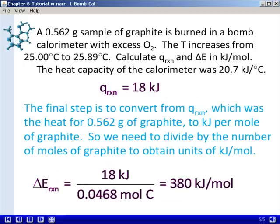Then the final step is to take that Q for the reaction and convert it into ΔE, but remember that Q for the reaction was the heat for only 0.562 grams of graphite, and we want to convert that to kilojoules per mole of graphite. So we're going to take that Q for reaction in kilojoules and divide it by the number of moles of graphite to get units of kilojoules per mole. In this calculation, I've already taken the mass of graphite, 0.562 grams, and converted it to moles of graphite using the molar mass of carbon, and we get 0.0468 moles of carbon. So when we divide that into the Q for the reaction of 18 kilojoules, we get a ΔE for the reaction of 380 kilojoules per mole.